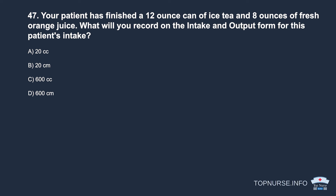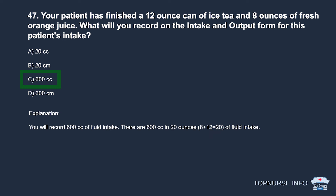Question 47: Your patient finished a 12-ounce can of iced tea and 8 ounces of fresh orange juice. What will you record for fluid intake? a. 20 cubic centimeters. b. 20 centimeters. c. 600 cubic centimeters. d. 600 centimeters. Correct answer: c. 600 cubic centimeters. There are 600 cubic centimeters in 20 ounces (8 + 12 = 20 ounces of fluid intake).